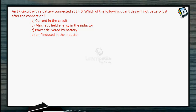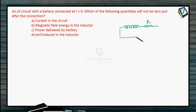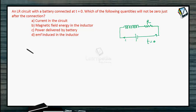An LR circuit with a battery is connected at T = 0. Which of the following quantities will not be 0 just after the connection? This is a standard LR circuit with an inductor connected in series with resistance R, connected across a battery with a key. At T = 0 the key is pressed and current starts flowing in the circuit.